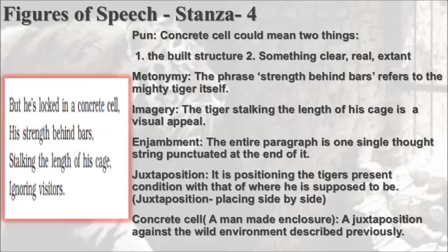The next device we would discuss is metonymy. The phrase 'strength behind bars' refers to the mighty tiger itself. As you all already know, metonymy is the use of a quality that is associated with one thing to represent the thing itself. In that sense, strength is a quality associated with the tiger, so 'strength behind bars' refers to the mighty tiger itself.